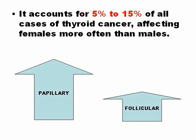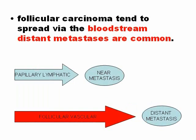Follicular carcinoma represents 5% to 50% of all thyroid cancers and is more common in women. Papillary is more common than follicular. Follicular carcinoma differs from papillary in that it spreads via the bloodstream. You can remember this because follicular has the letter F, like fluid. Papillary goes lymphatic; follicular goes through the blood.